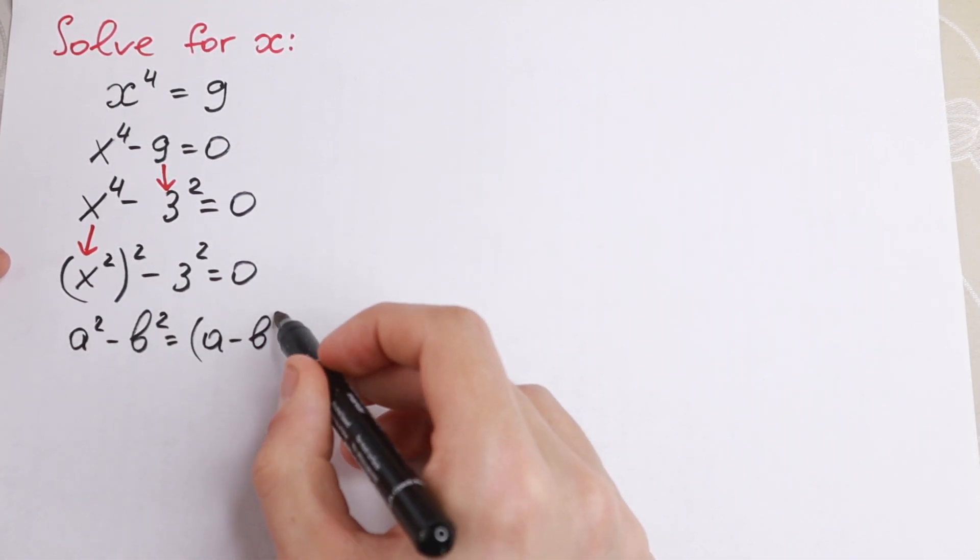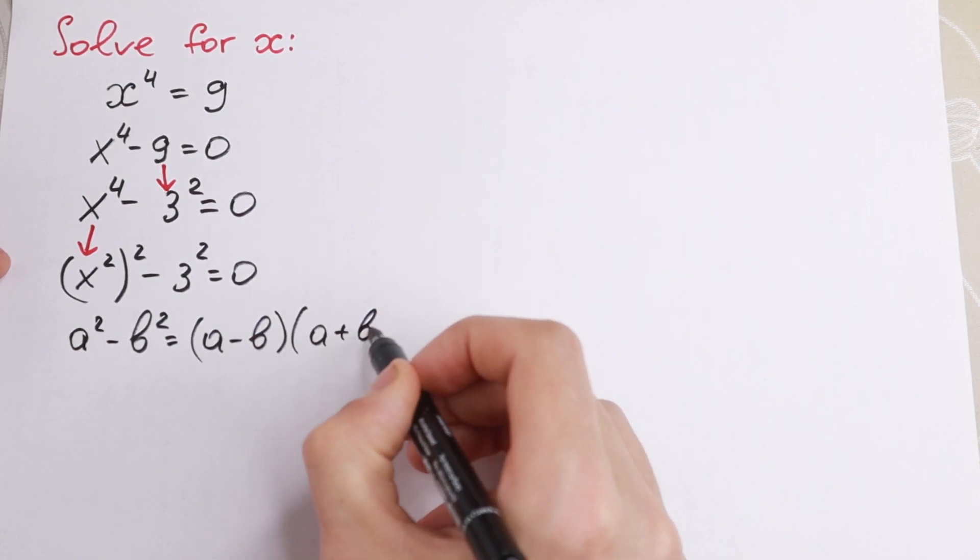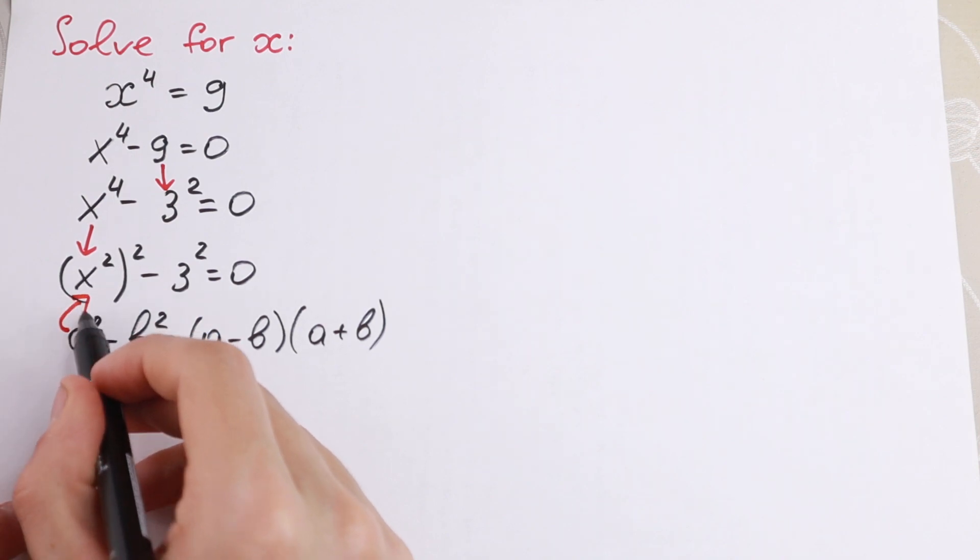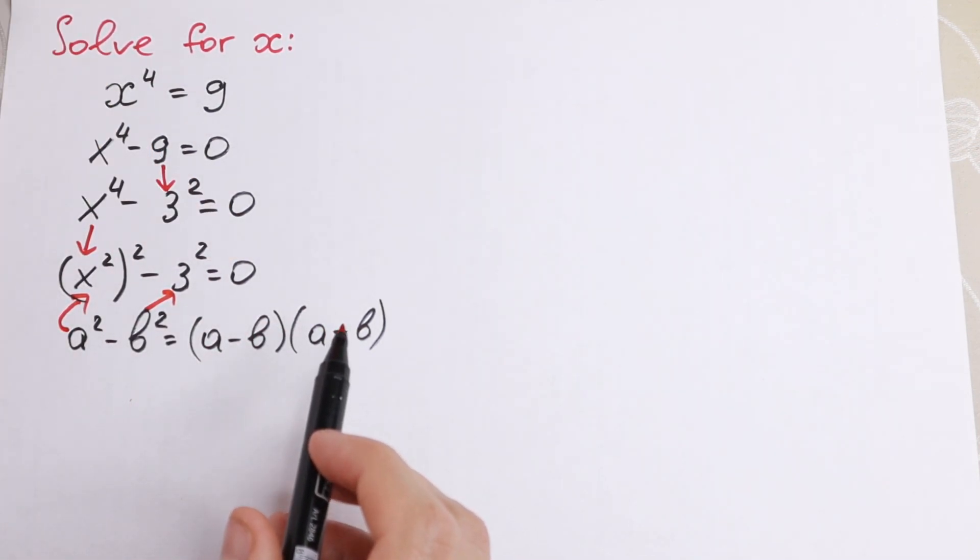And in our case we have a equal to x squared and b equal to 3, and right here we have squares.